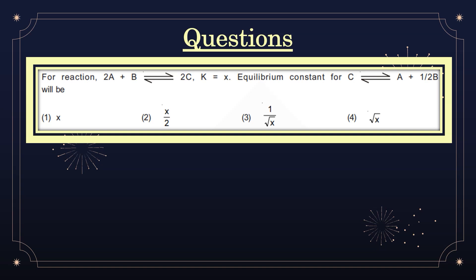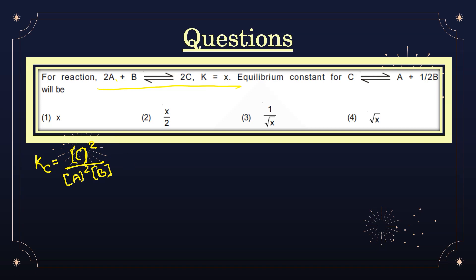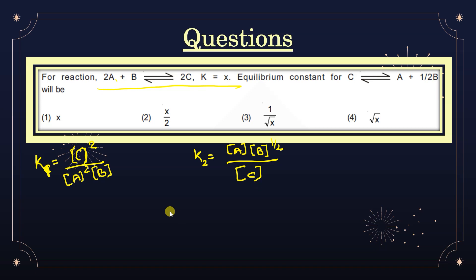Question: For the reaction 2A + B ⇌ 2C, the equilibrium constant is x. What will be the equilibrium constant for C ⇌ A + ½B? First write Kc for the given equation: K1 = [C]^2 / ([A]^2 · [B]). Now write K2 for the new equation C ⇌ A + ½B: K2 = [A] · [B]^(1/2) / [C].